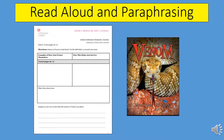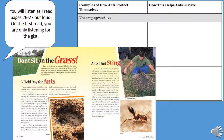First up, we'll be doing a read-aloud and paraphrasing using our book Venom. Find this page in your purple workbook — it says Source Venom pages 26-27 at the top. Pause the video now until you've located that page. You will listen as I read pages 26 and 27 out loud. On the first read, you are only listening for the gist.